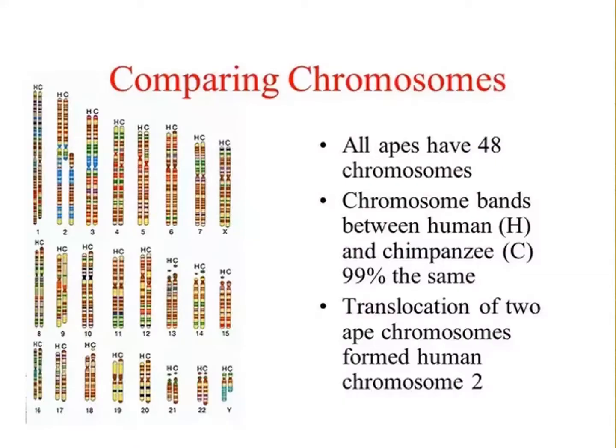It was discovered later that the difference in numbers between humans and apes centered around chromosome number 2. It turns out that the human chromosome number 2 appears to have been a fusion between two previously separated chromosomes.